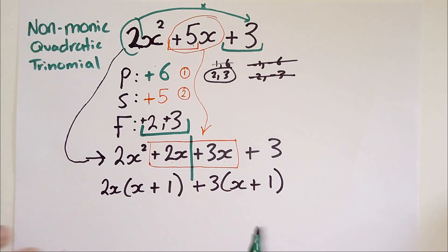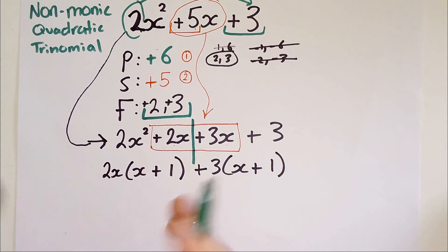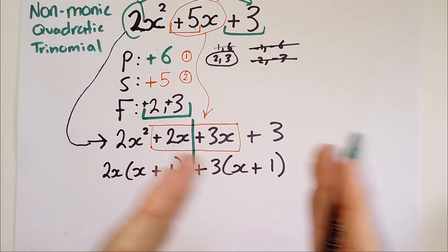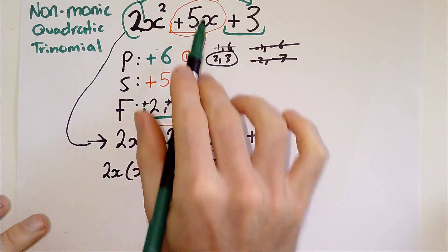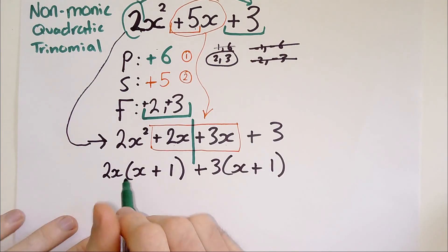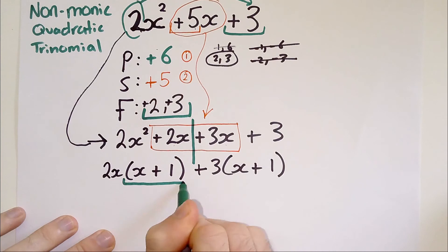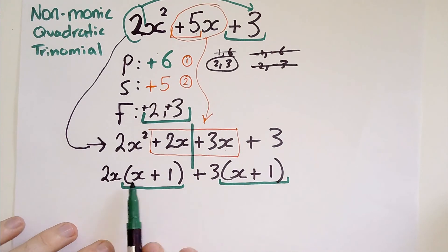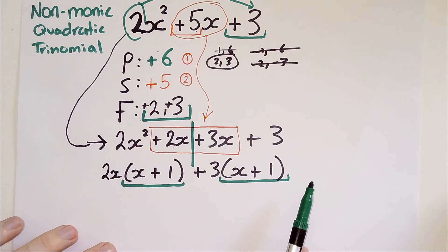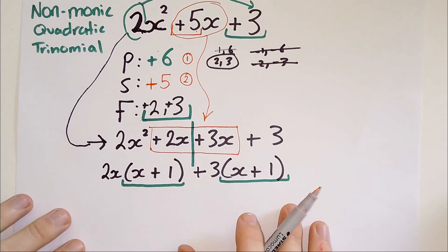What you'll notice here, and this has to happen if you've done it correctly, is that I've factorized these two halves of the equation, which might seem odd. Why not keep it as five X? Why split it up? Well, you split it up because what will happen is you'll notice that these brackets are identical. And that will happen if you've done this correctly. You get X plus one and X plus one.